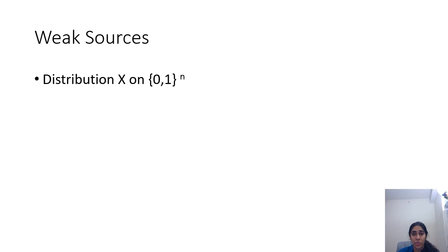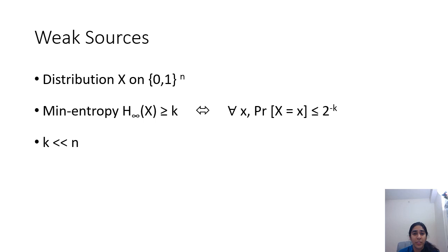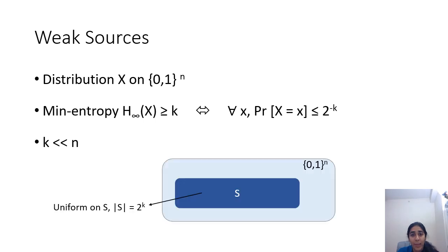Let me next talk about what I mean by a weak source. A weak source is represented by a distribution on n bits that has min entropy k, where k is something that's much smaller than n. Min entropy k corresponds roughly to each point in the distribution being selected with probability at most 2 to the minus k. An example of a weak source with min entropy k is the uniform distribution on a subset of size 2 to the k of the space {0,1} to the n.